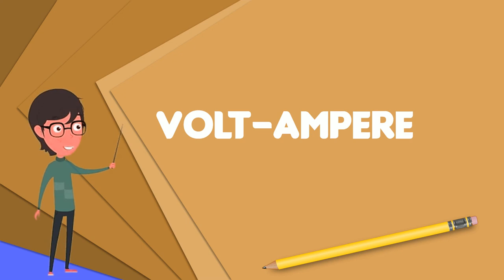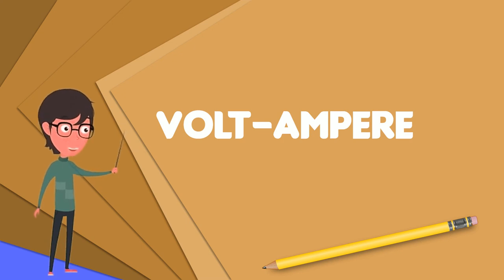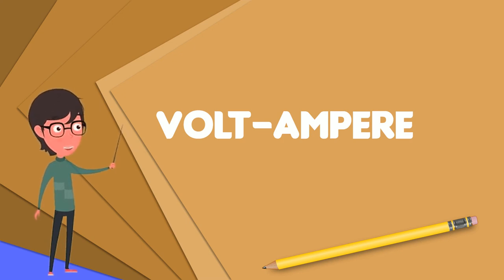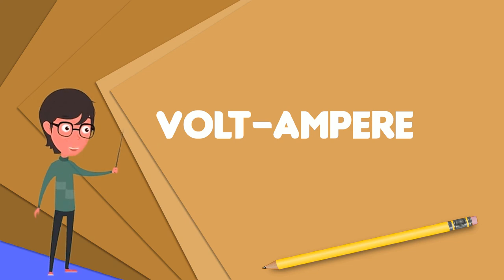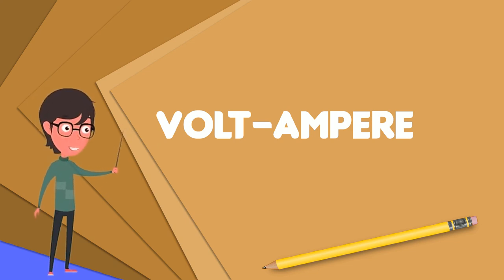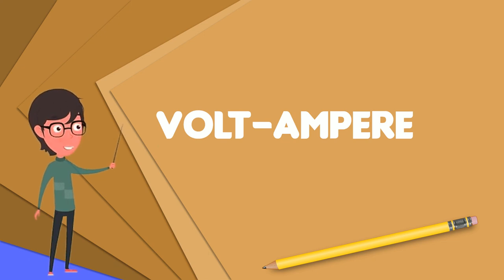VA ratings are also often used for transformers. Maximum output current is then the VA rating divided by the nominal output voltage. Transformers with the same sized core usually have the same VA rating. The convention of using the volt-ampere to distinguish apparent power from real power is allowed by the SI standard.